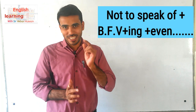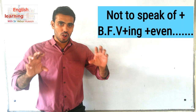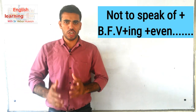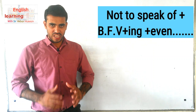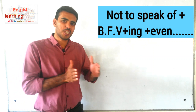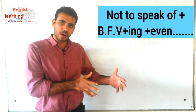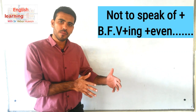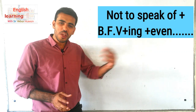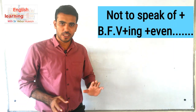The topic is the structure of such sentences. The structure will be: 'not to speak of' plus the verb in -ing form, then any extra word, then 'even,' then the rest of the sentence.